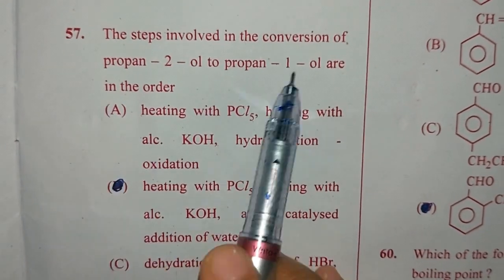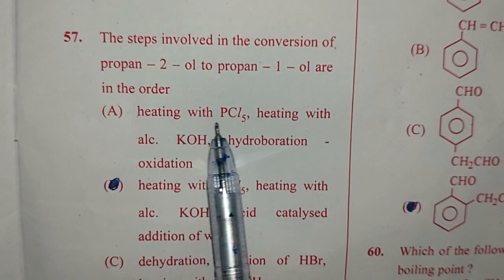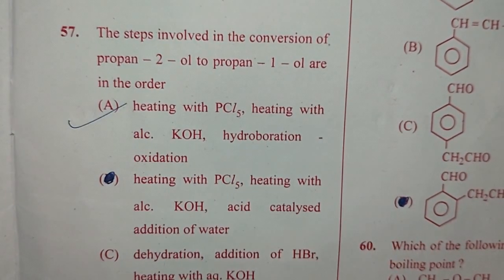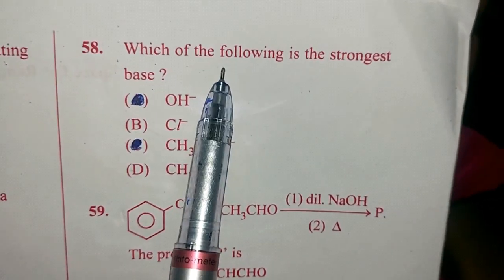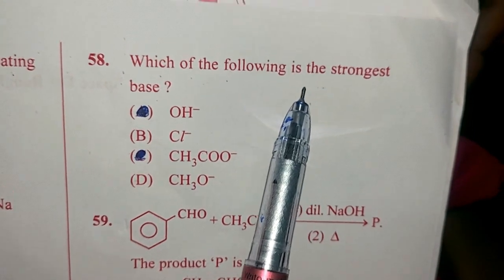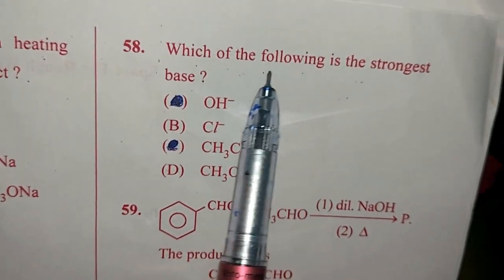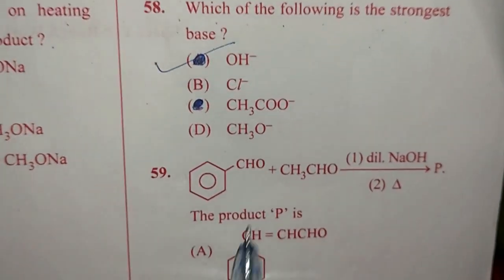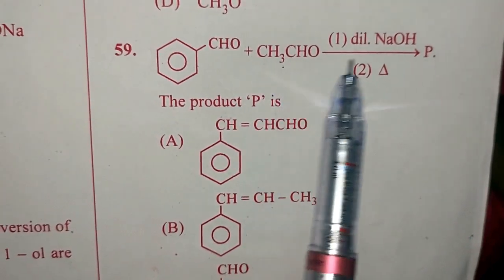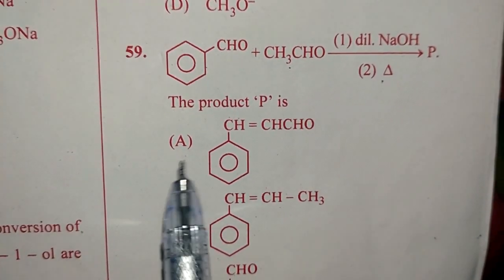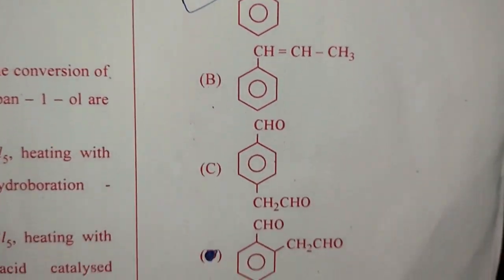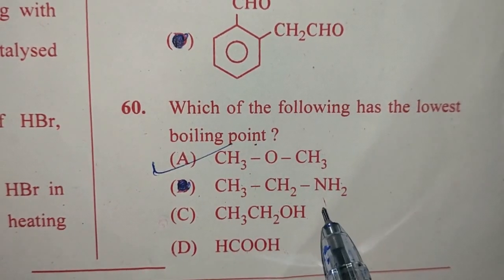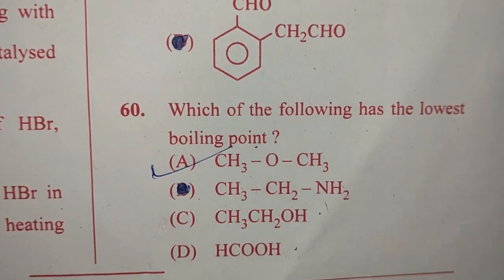Question number 57. The steps involved in the conversion of propane-2-ol to propane-1-ol are in the order: heating with PCl5, heating with alcoholic KOH, hydroboration oxidation. So answer is option A. Question number 58. Which of the following is the strongest base? Answer is option A, OH-. Question number 59. When benzaldehyde reacts with acetaldehyde in the presence of dilute NaOH? It is aldol condensation. So answer is option A. Question 60. Which of the following has the lowest boiling point? Answer is option A, because it cannot form hydrogen bonding. Remaining 3 can.